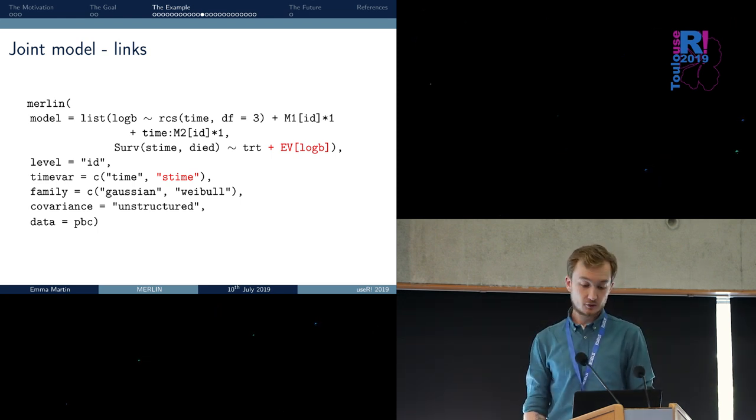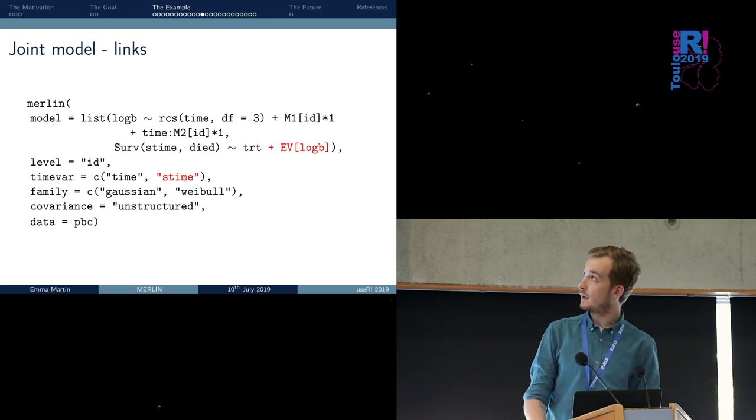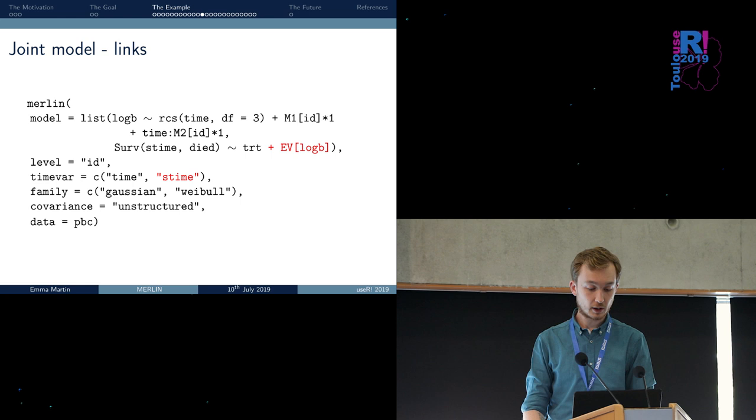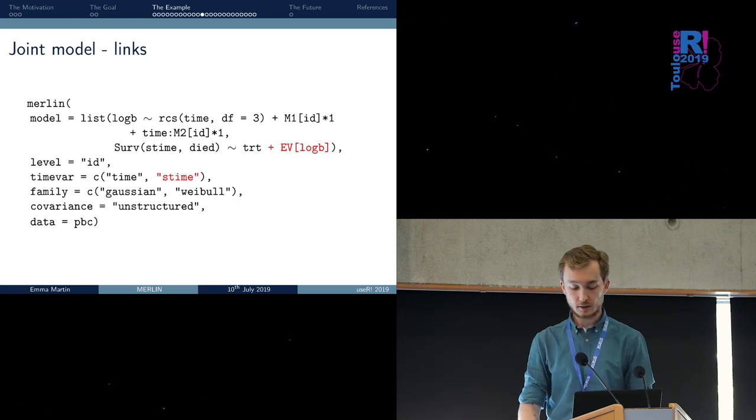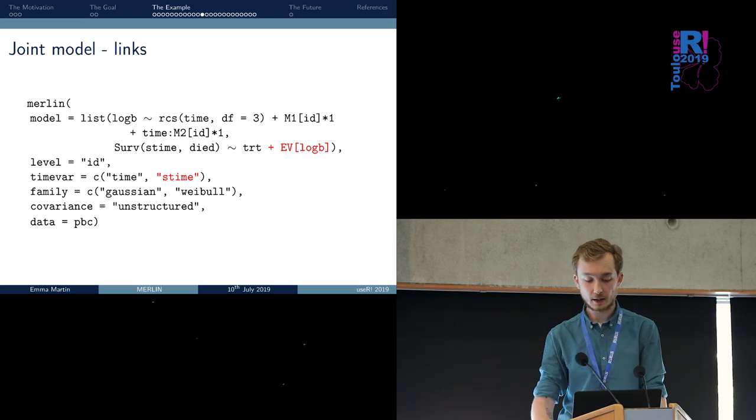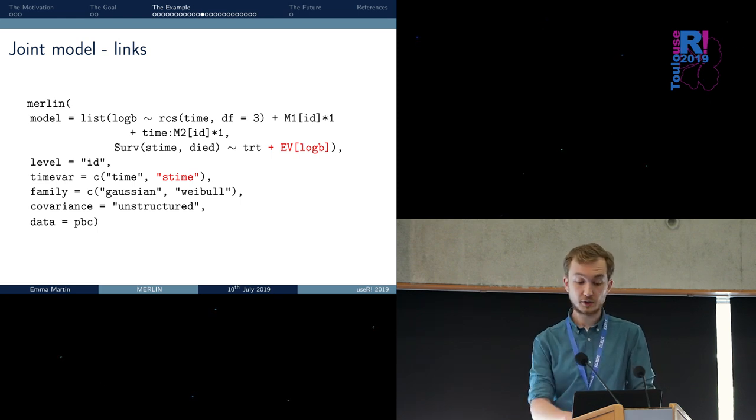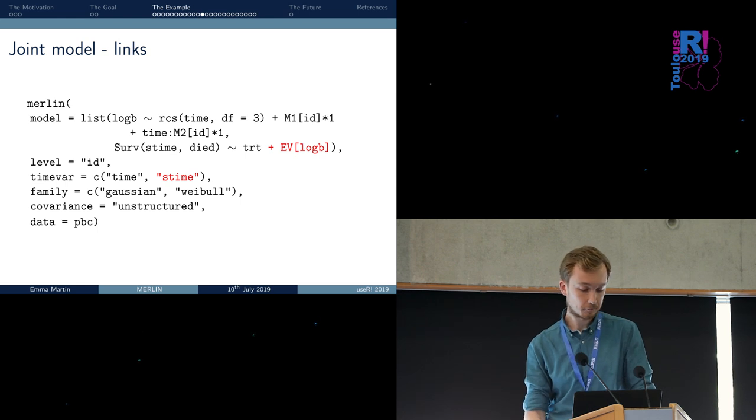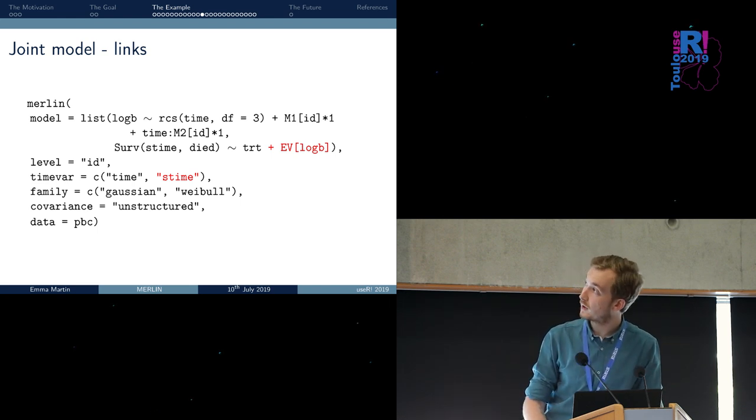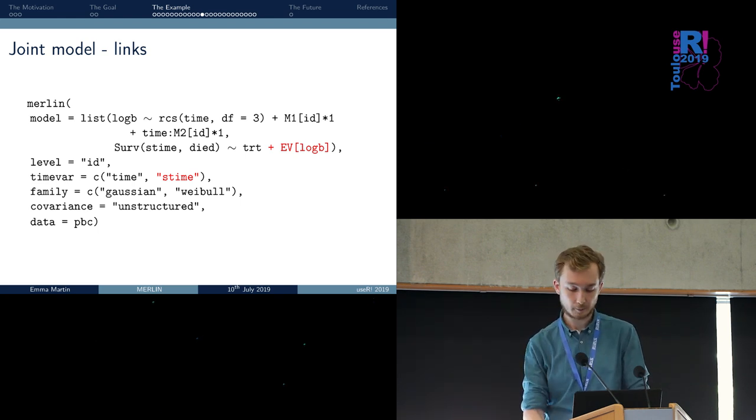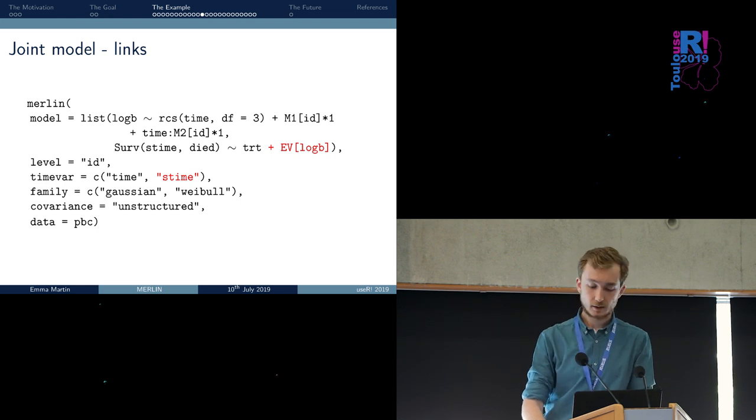Within the joint longitudinal survival model, we can link the survival and the longitudinal model by including the expected value of the longitudinal biomarker. By doing this, the two models are linked, and we get an estimated hazard ratio or coefficient for a one unit increase in the longitudinal biomarker. We have to add S time on the time var option. This is required to match time in the longitudinal model and the survival time in the survival model.